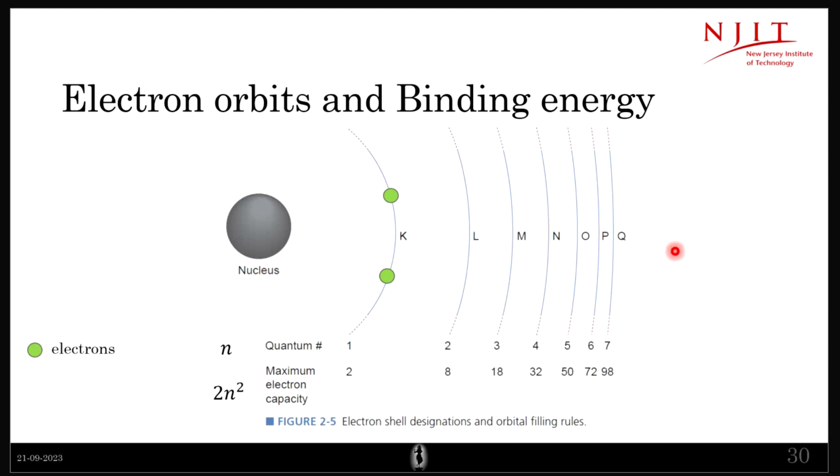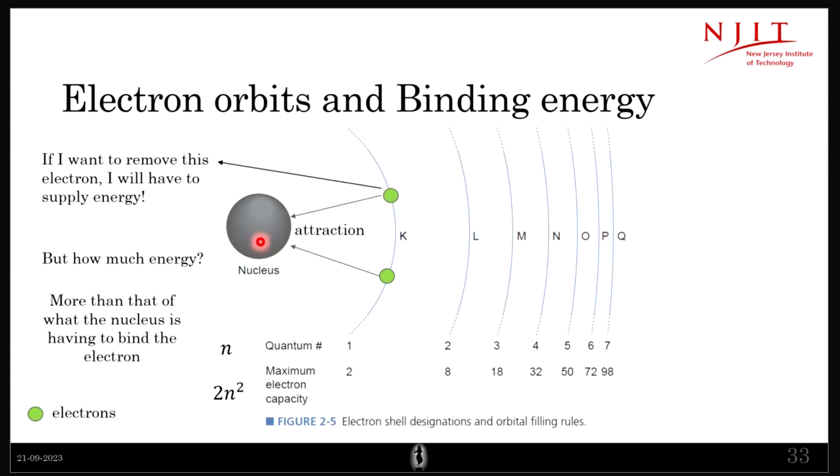Let's say I want to remove this electron. If I want to remove a particular electron from its shell, I will have to supply energy. And the question is how much energy? So how much energy can I supply to remove this particular electron? It turns out that depends on the attraction that it is facing from the nucleus. So whatever the energy is, it should be greater than the energy by which the nucleus is attracting it. And this particular—so now this, let's say, is a free electron.